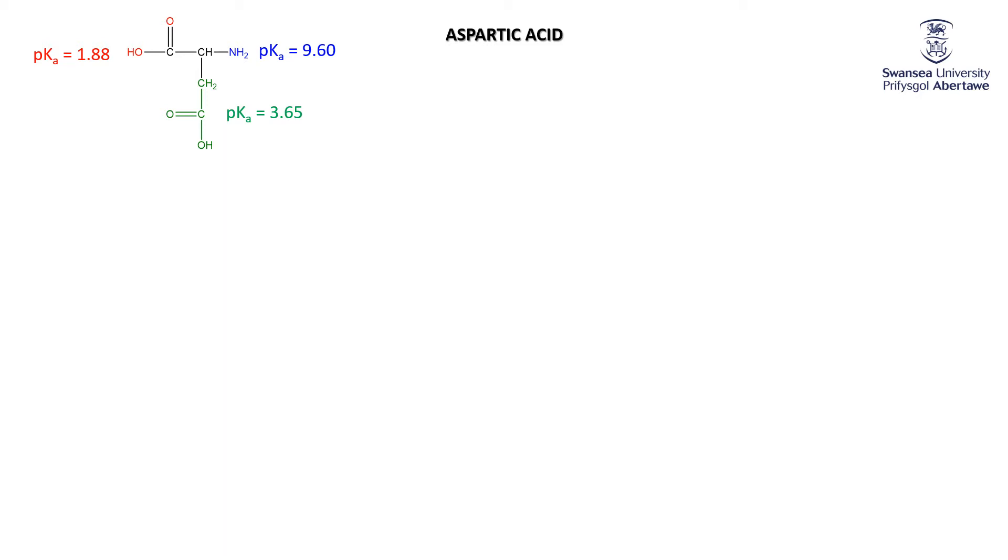That means we've got extra complexity when we start thinking about the pH behavior. At very low pH, everything is in the acidic form—the red acid, the green acid, and the amine is in its conjugate acid form. But as the pH starts increasing, we start seeing a change. The red acid is the best acid because it's got the lowest pKa. So the first thing we see is that the red acid starts to turn into its conjugate base.